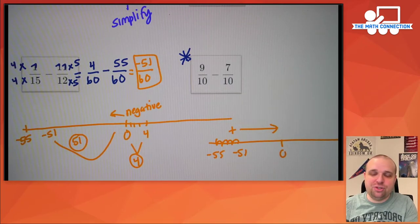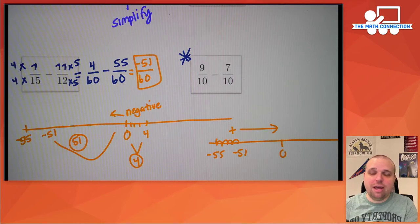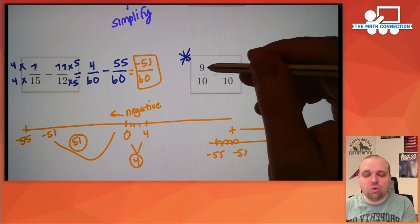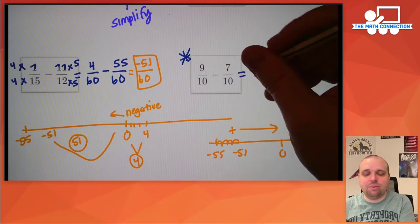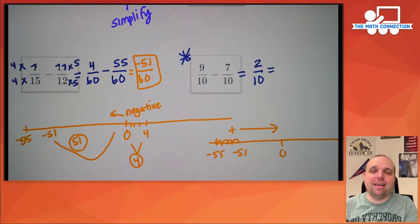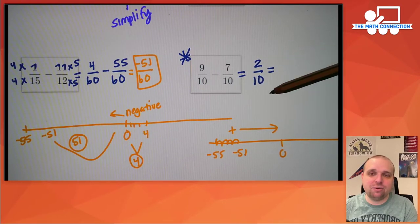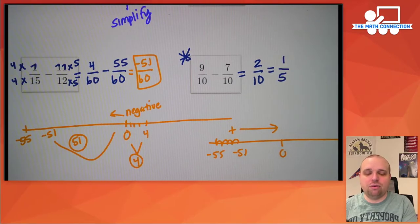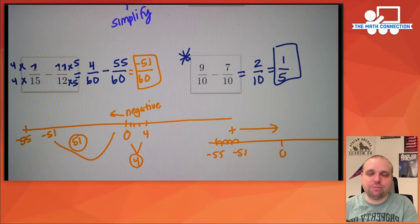The next subtraction problem already has a common denominator, so you can basically mental-math it. Nine minus seven is 2 over 10. Simplify by dividing top and bottom by 2: the final answer is 1/5.